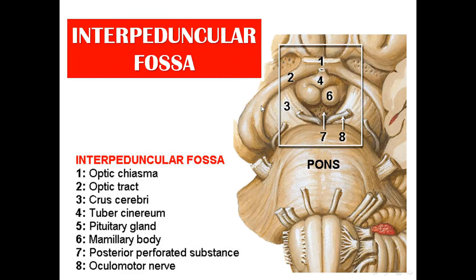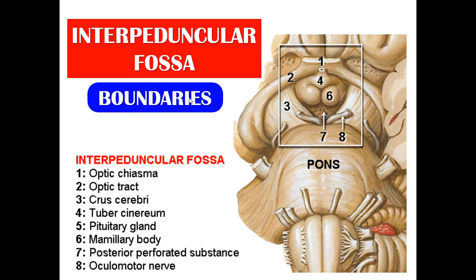The interpeduncular fossa is located between the two cerebral peduncles. Its boundaries are: anterior — the optic chiasma; posterior — the upper border of the pons; on each side — the optic tract (anterior) and the crus cerebri (posterior).